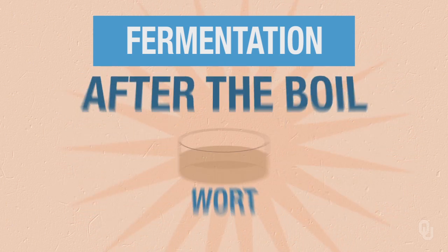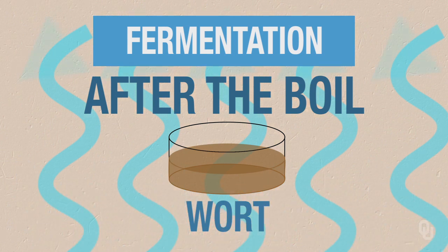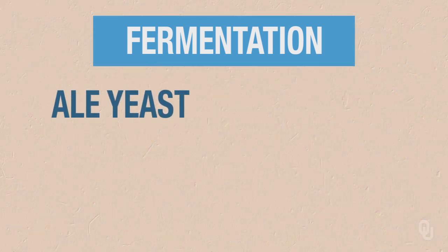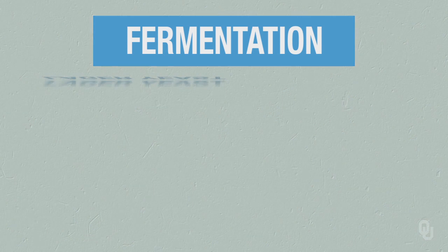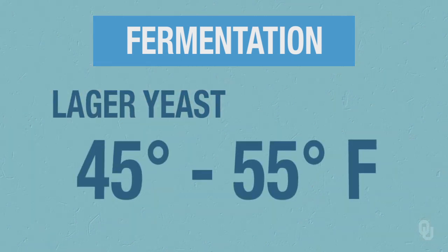Once we're done with the boil, we need to cool the wort down to the proper temperature for our yeast. Ale yeast usually runs in the 65 to 75 Fahrenheit range, where lager yeast is much colder in the 45 to 55 Fahrenheit range — one of the reasons that lager yeast weren't overly popular, or even possible, until modern refrigeration.